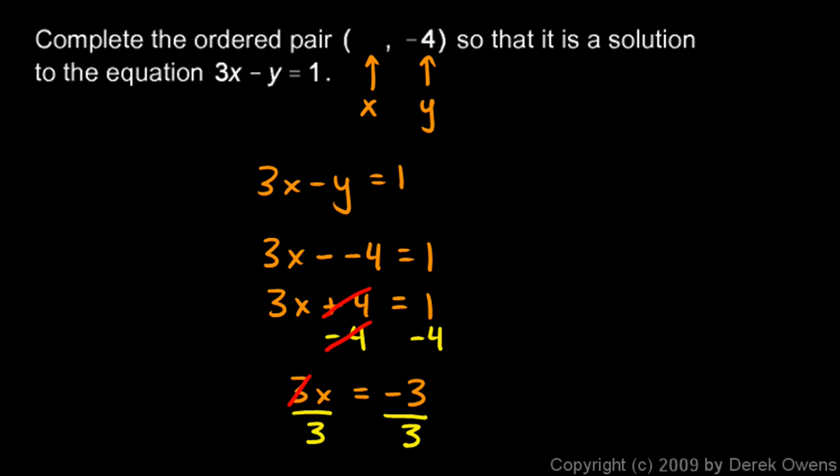And then on the left, the 3 up here and the 3 down there cancel out, and I'm left with x all by itself. And x equals negative 3 over 3 which is negative 1.